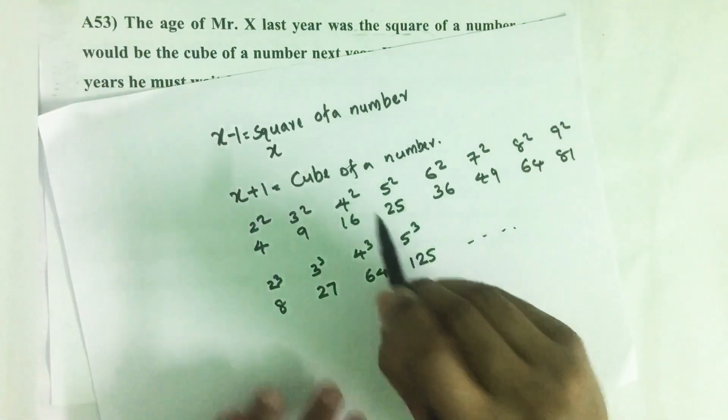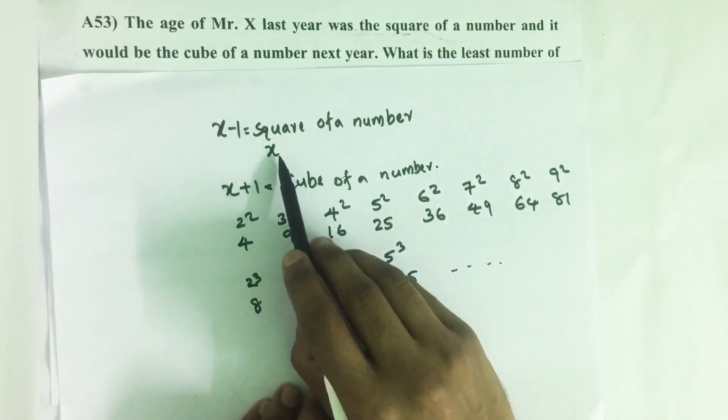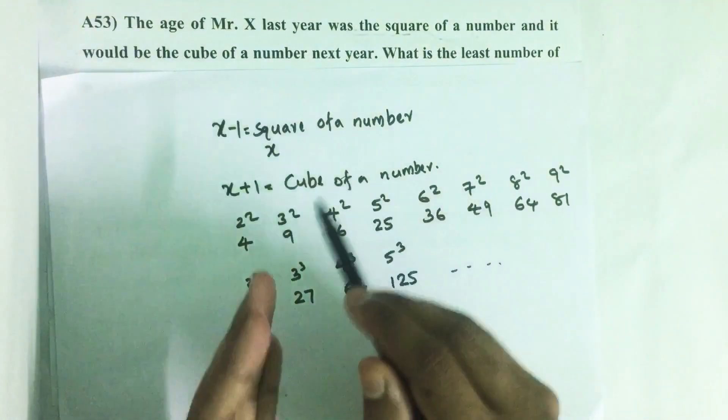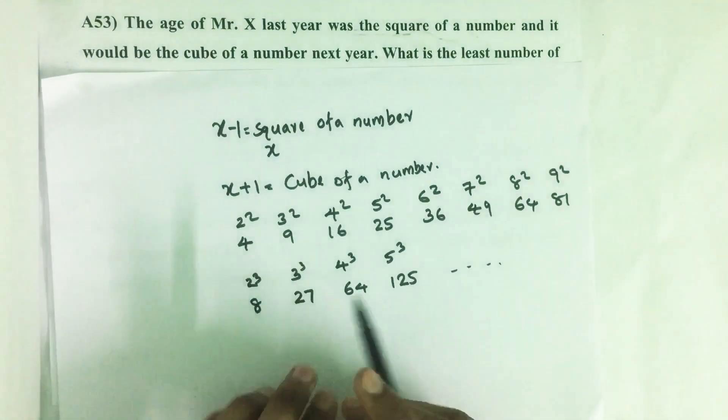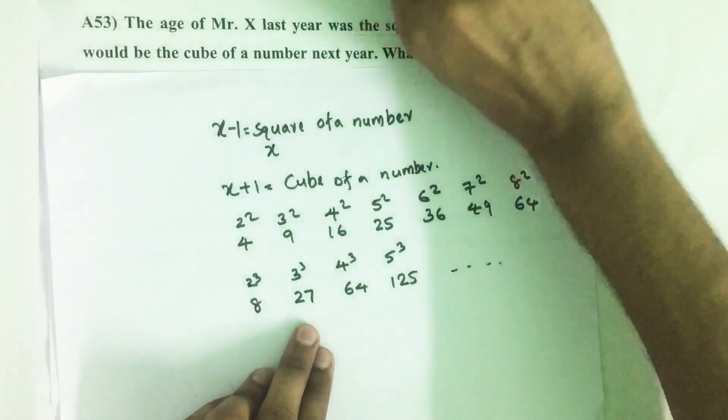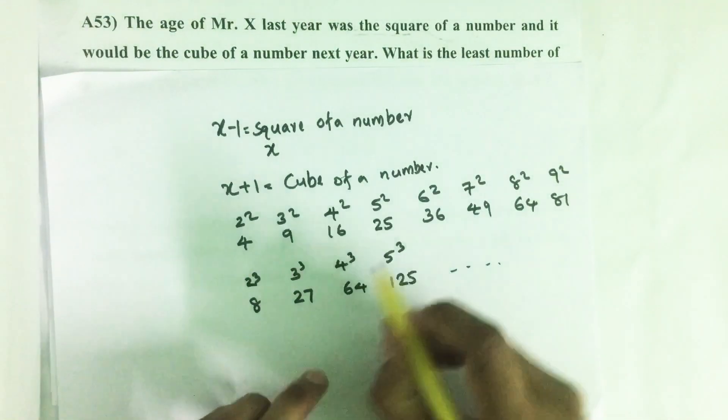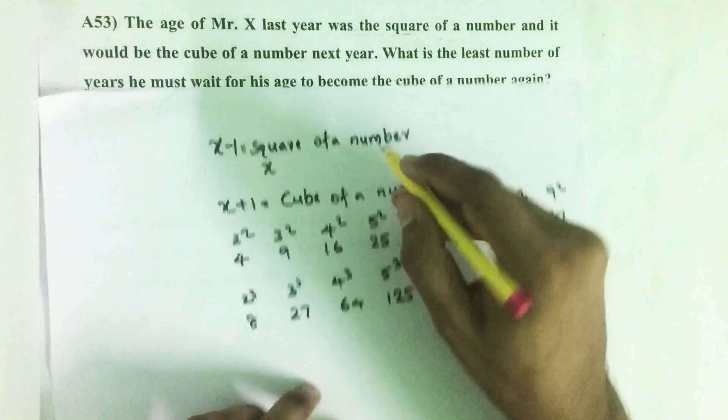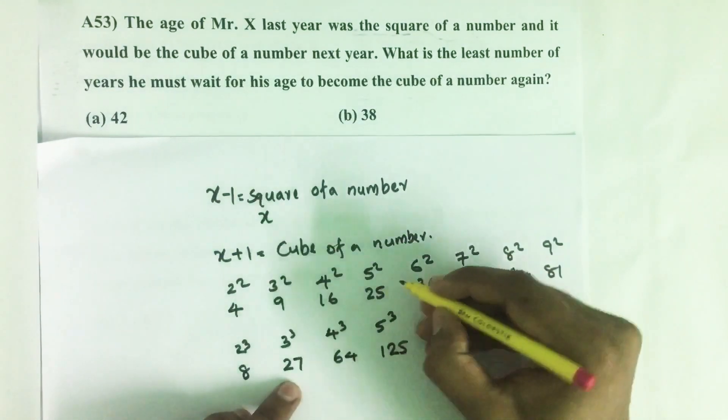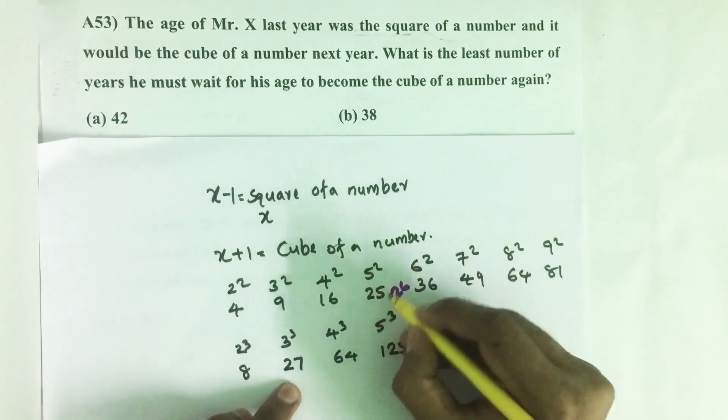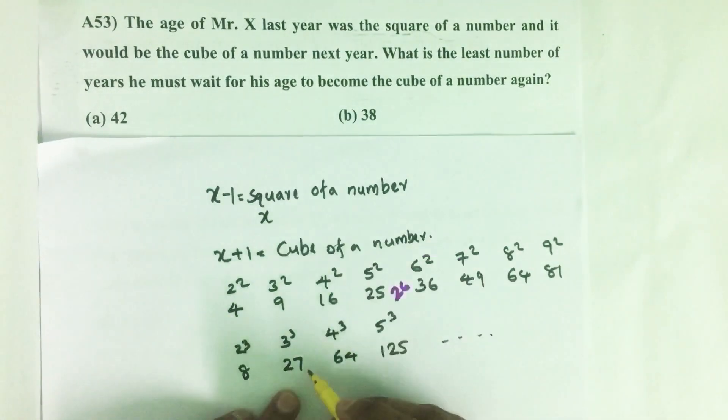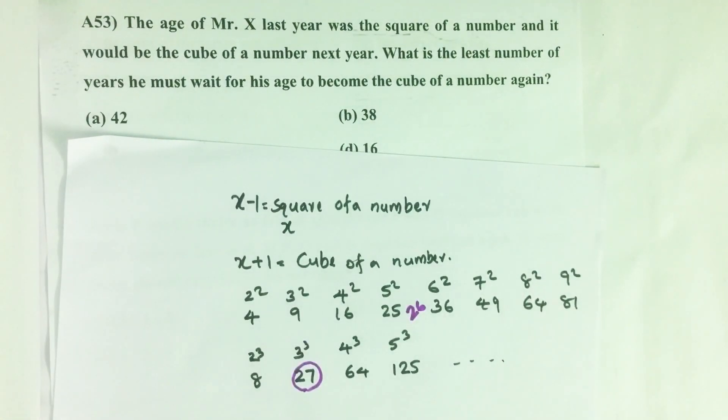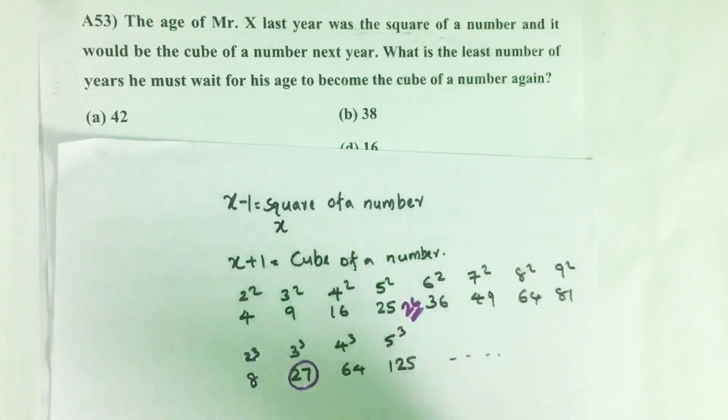It is said that last year his age was a square and next year it will be a cube. From this, it is clear there is only one possibility. Last year his age was a square of a number and next year it is a cube. That means his present age is 26.